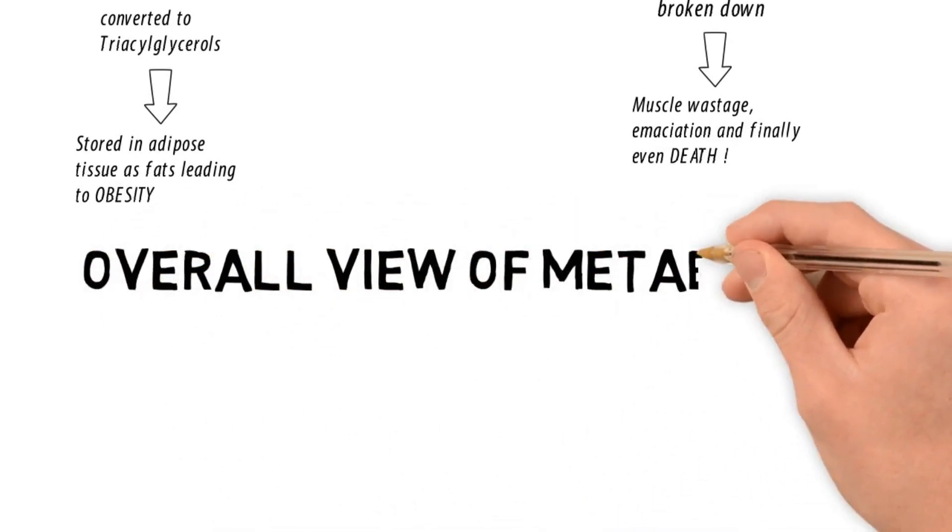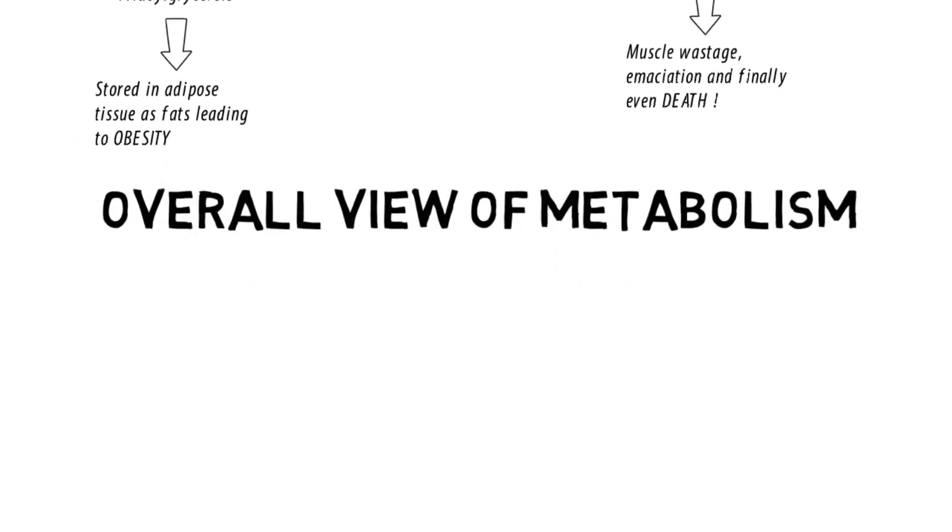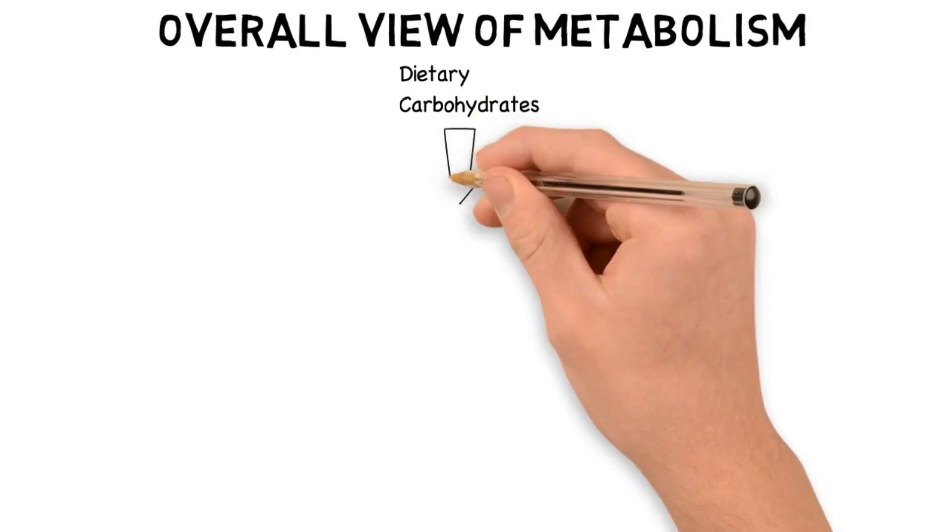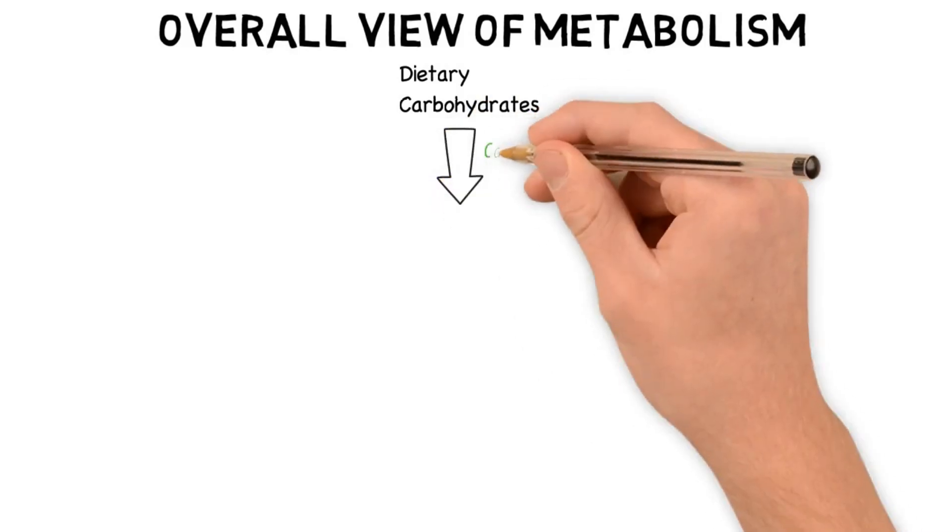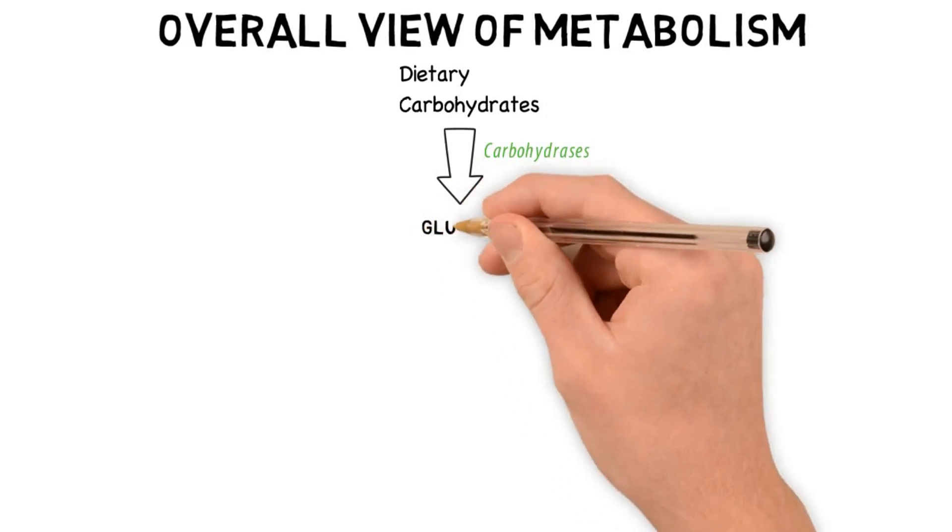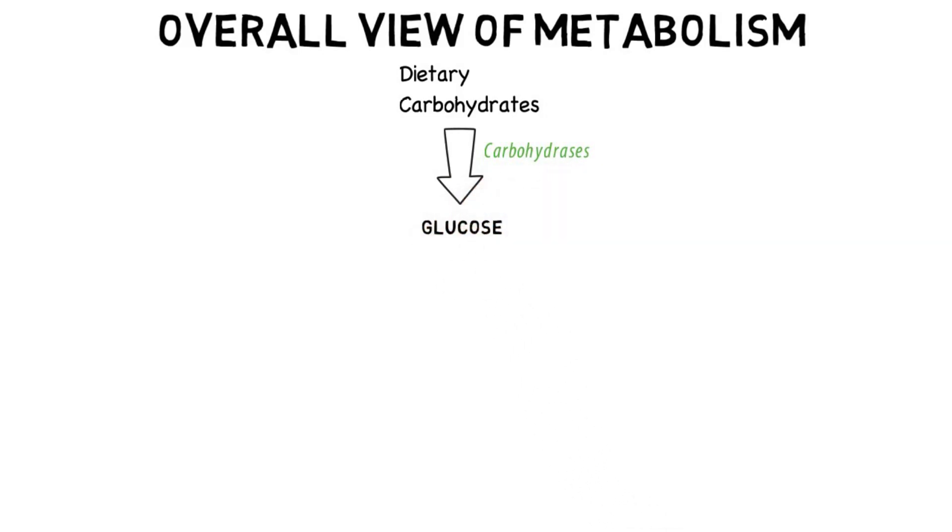Now, let us take an overall view of metabolism. The dietary carbohydrates that we intake are broken down by carbohydrases present in the GI tract into simpler sugars like glucose and the dietary lipids, they are all broken down by lipases into fatty acids and glycerol.